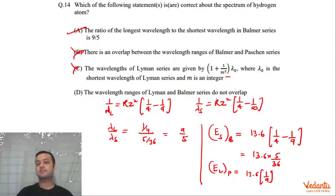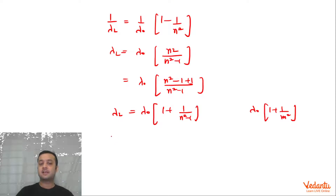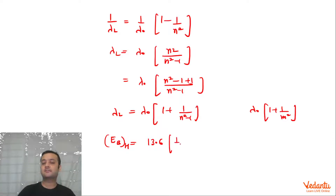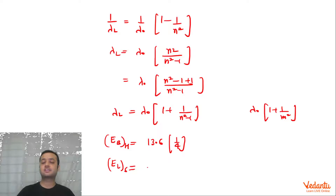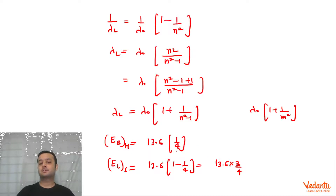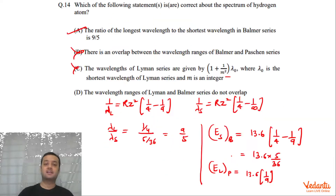Option D states that the wavelength ranges of the Lyman and Balmer series do not overlap. The highest energy of Balmer is when the transition goes from infinity to n = 2, giving 13.6 × 1/4 = 3.4 eV. The smallest energy of Lyman is always greater than this. Since their energies don't overlap, their wavelengths won't overlap either. Hence Option D is correct. The correct answers are A and D.